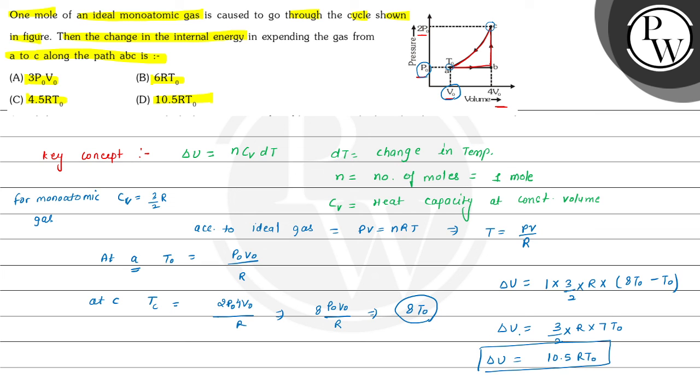This 10.5RT₀ is given in option D, hence option D is the correct choice for this question. Hope you understood it well. All the best and thank you.